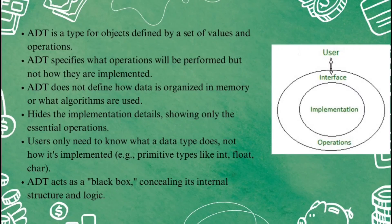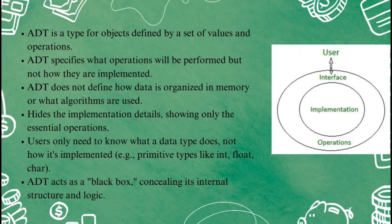ADTs as a black box: an abstract data type works like a black box — you know what it can do, but you don't see what's going on inside. The only thing you need to care about is what operations you can perform, not the underlying logic or structure. For instance, when you work with a stack abstract data structure, you know you can push, pop, or check if it's empty, but you don't need to know how these operations are managed behind the scenes.